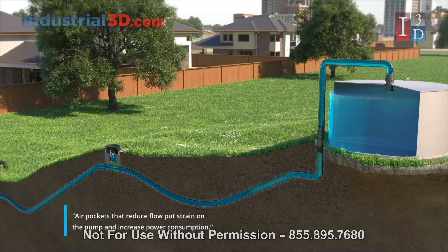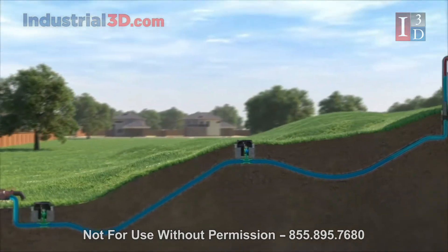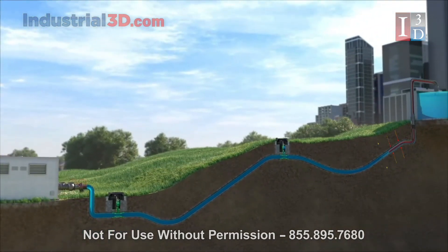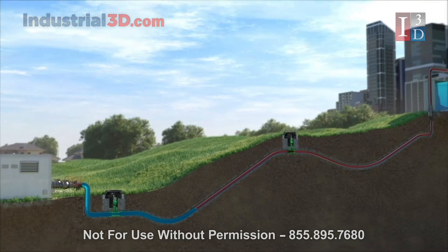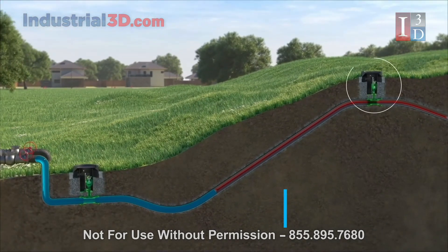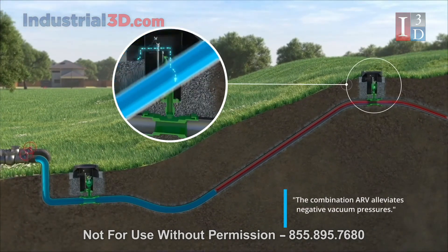Once the pump cycle is complete, the media begins to flow back down the pipeline. A vacuum situation is occurring because no air is being introduced back into the pipeline. The valve allows air to be introduced back into the line to prevent avoidable catastrophic situations.